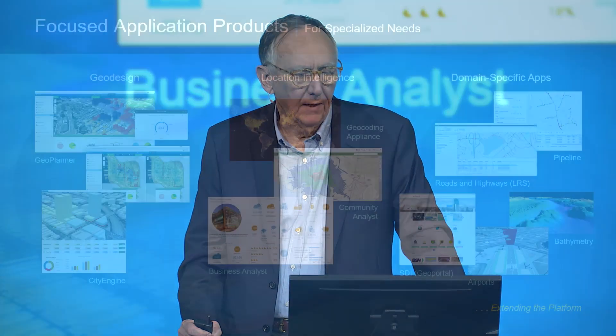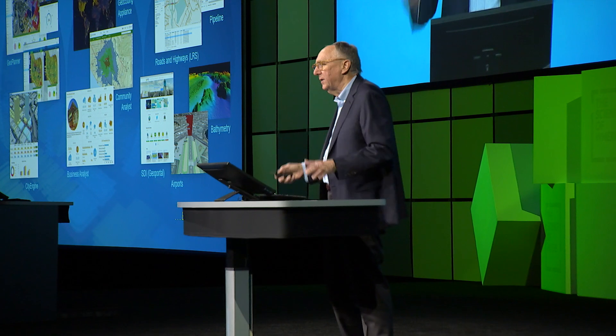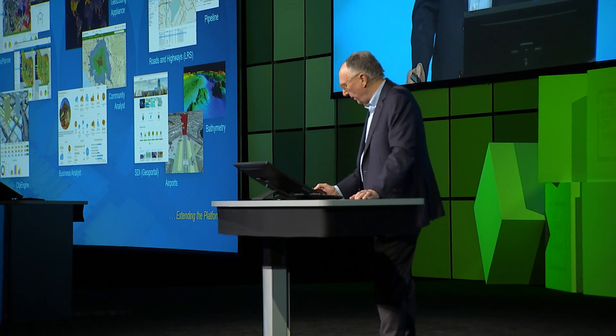Esri builds a series of focused application products. These respond to specialized needs like geo design — GeoPlanner and CityEngine — location intelligence like the geocoding appliance, which is the fastest geocoding appliance in the world, as well as Community Analyst and Business Analyst. There are also domain-specific products for pipelines, roads and highways, bathymetry, and airports. These are all designed to extend the platform — they leverage the content that you build and work with.